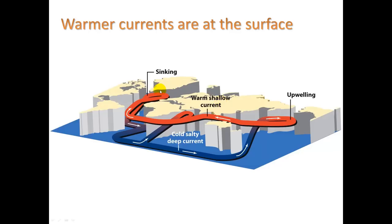Warmer currents are at the surface — shown here in red. Areas of upwelling are where water that is deeper has been brought up to the surface, bringing lots of nutrients. We also see downwelling, where water sinks, which is important because it brings oxygenated water down below. Warmer currents are at the surface because when water warms up it expands, becomes less dense, and rises above colder water.